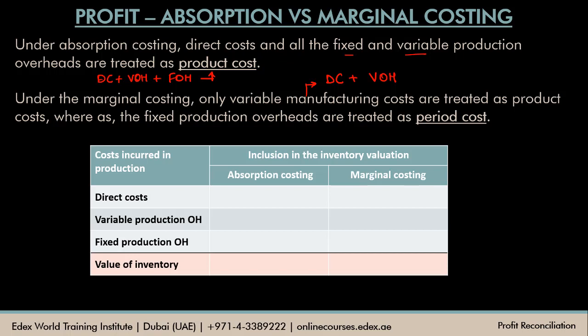How much output we produce, how much output we sell, what should be our activity level — for all these decisions we are not going to consider fixed production overheads at all because they have to be incurred regardless. We'll summarize this using a table showing what is included in inventory valuation under absorption costing and marginal costing. Direct cost and variable production overheads are included under both methods, while fixed production overheads are included only under absorption costing, not under marginal costing.